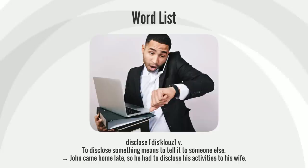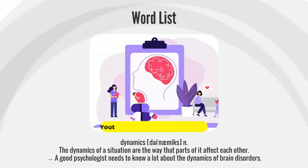To disclose something means to tell it to someone else. John came home late, so he had to disclose his activities to his wife.